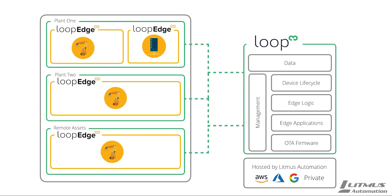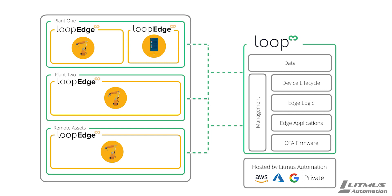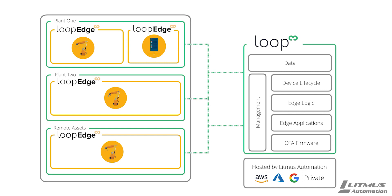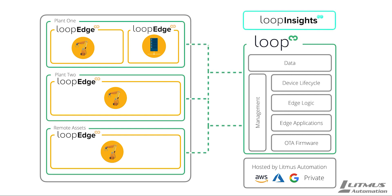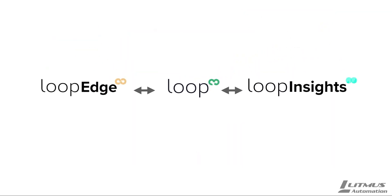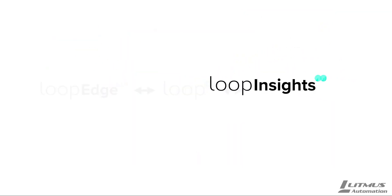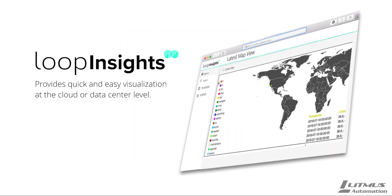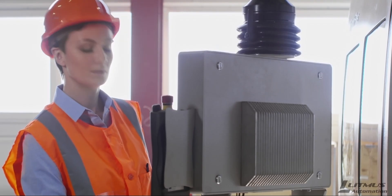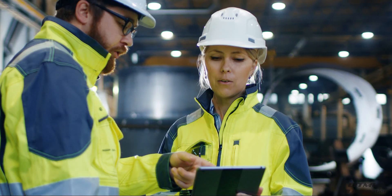And if you are an OEM, you receive an extra layer to manage your end users and inventory. And once data is available in LoopCloud from your IoT devices, LoopInsights provides quick and easy visualization at the cloud or data center level.